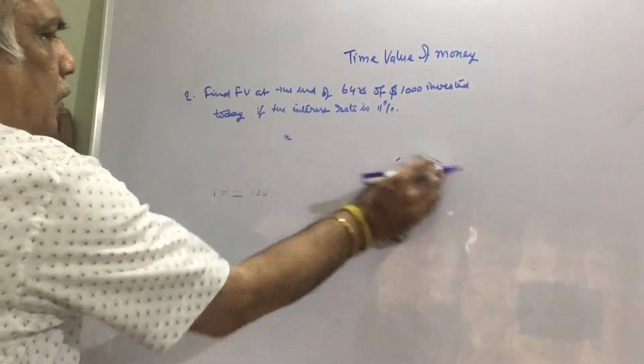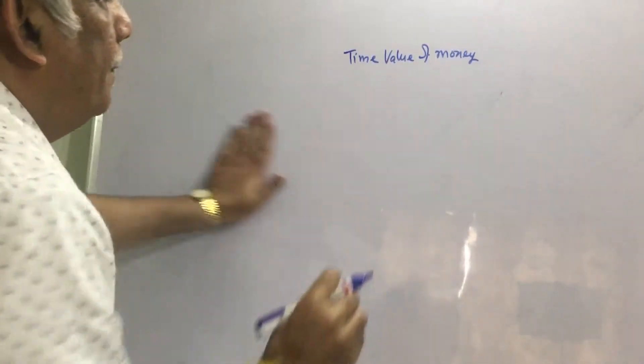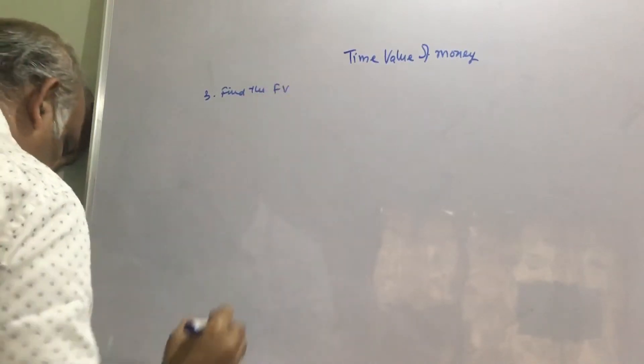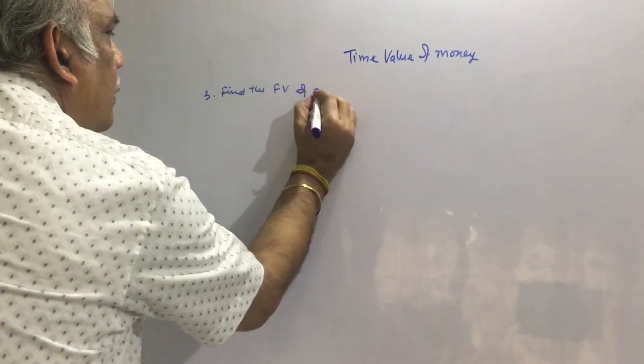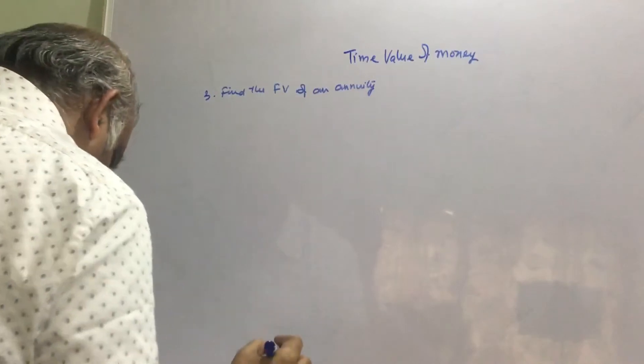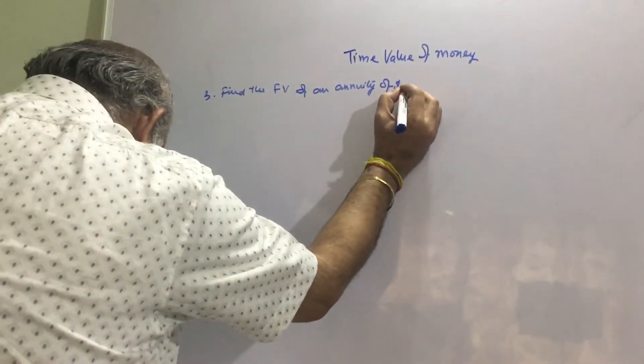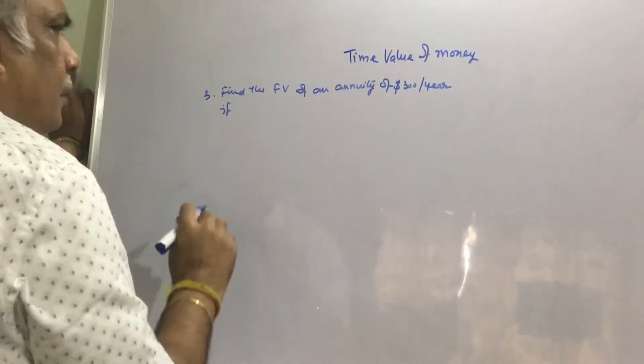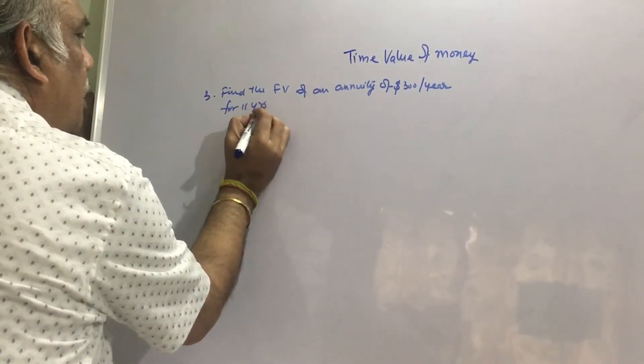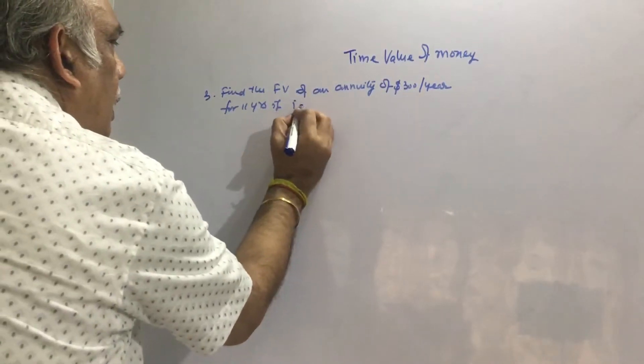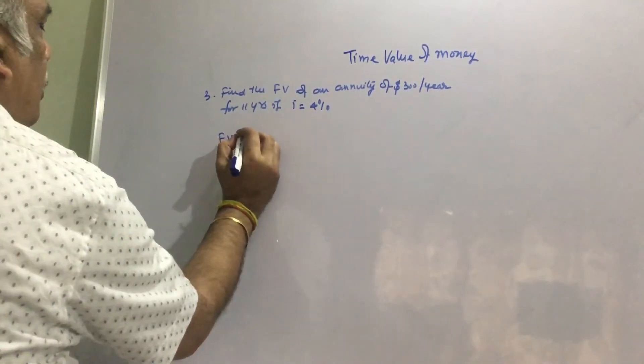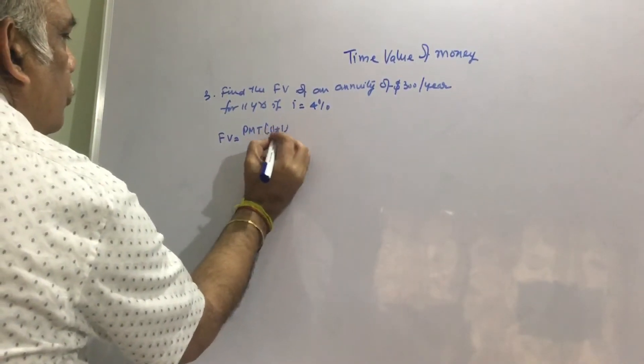Let us see the third problem: Find the future value of an annuity of $300 per year for 11 years if interest rate is 4%.